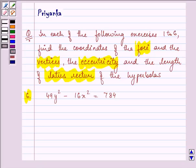Here the given equation of the hyperbola is 49y² - 16x² = 784. Now here,